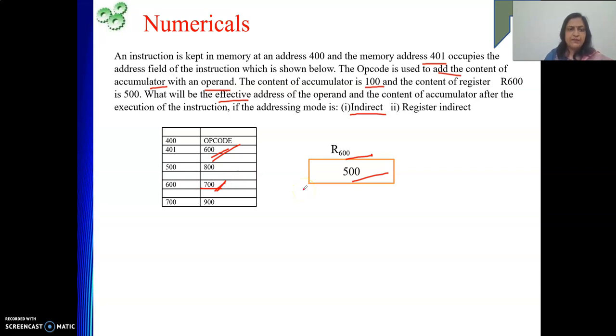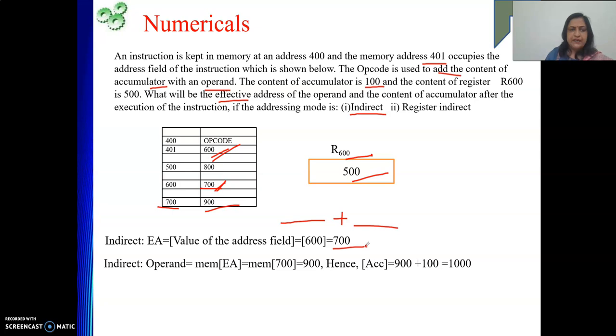Content of accumulator will be the previous content of accumulator addition with the value of the operand. Value of the operand is content of 700, which is 900. So 100 plus 900, it will be 1000. Indirect addressing mode, value of the address field 600 square bracket is 700. 700 is the address of your operand. In indirect addressing mode, your data will be at memory, whatever effective address is there. 700 content is 900. Hence, accumulator will be 900 plus 100, previous content of accumulator. So it will be 1000.